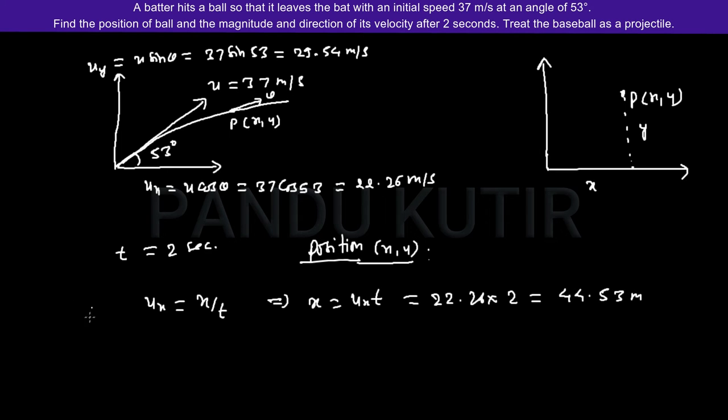Similarly for y we need to take another formula where acceleration is involved: s equals ut plus 1/2 at squared. I need to convert this formula into vertical components. For vertical component the displacement y equals uy times t minus 1/2 g t squared.